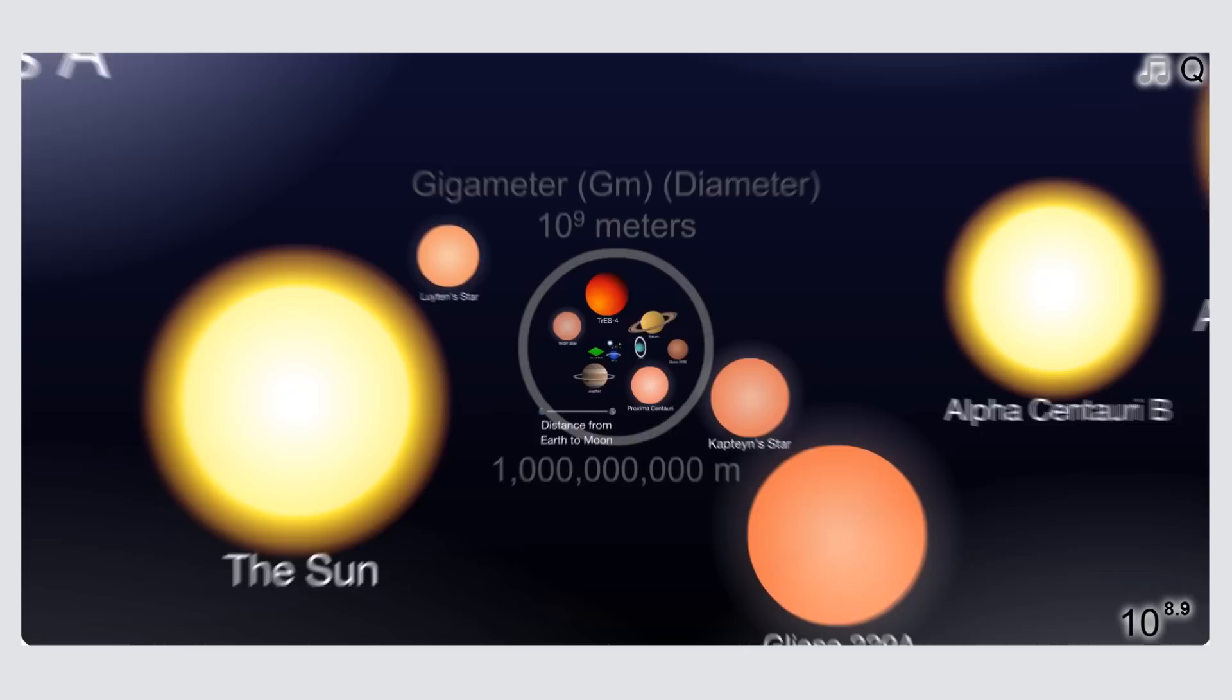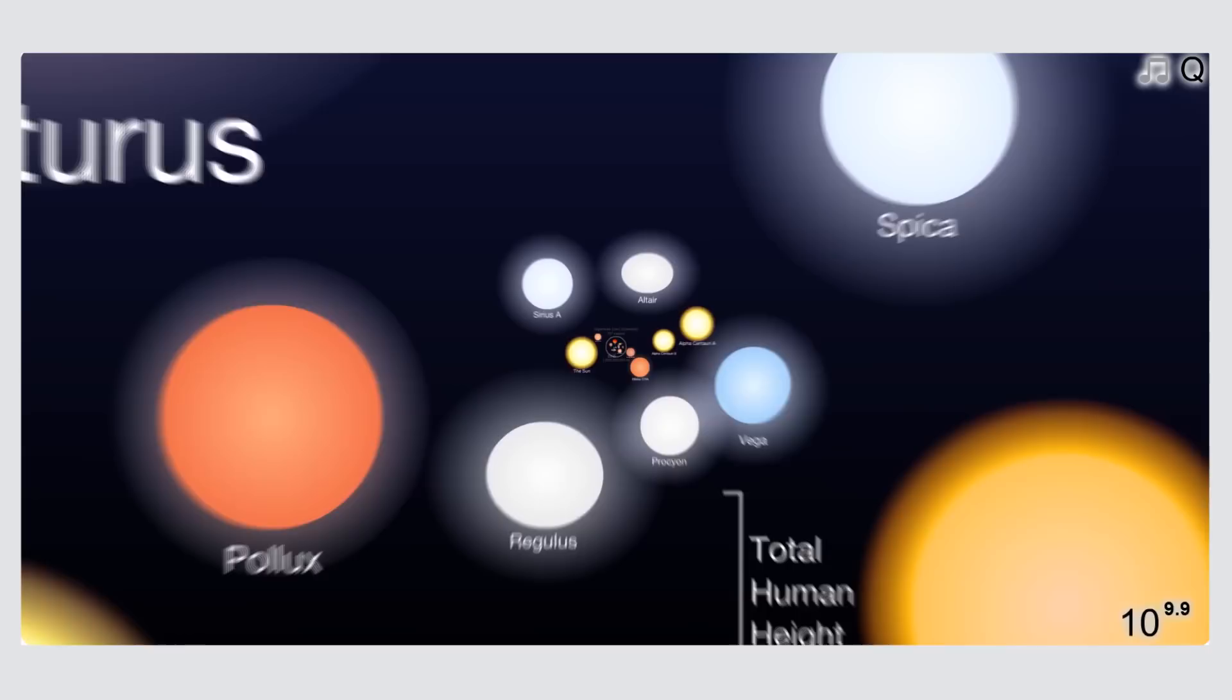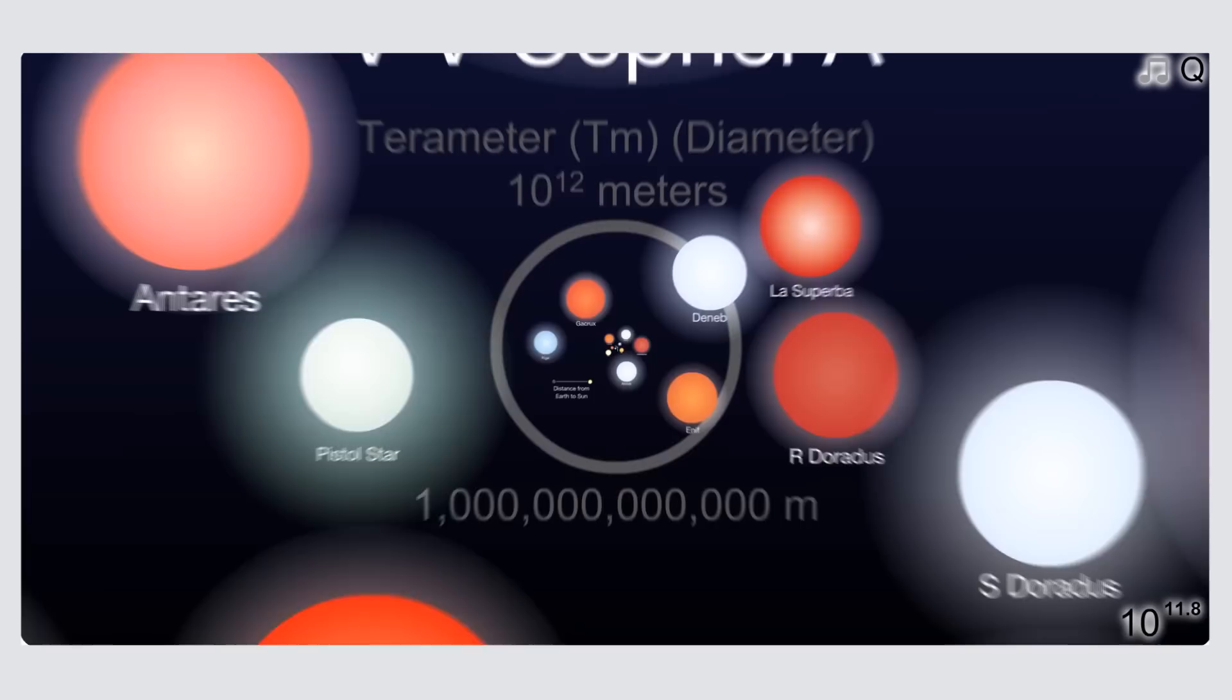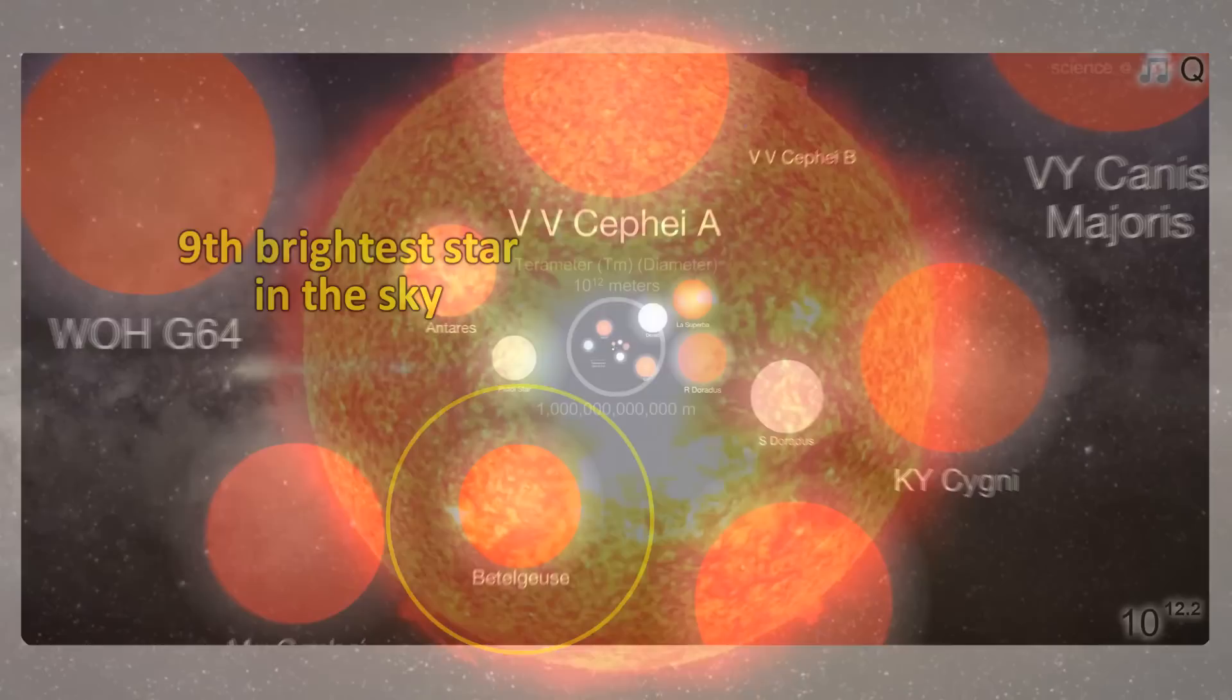Let's go 1000 times larger than the size of the sun, or 1 trillion meters. Now we're looking at some of the largest and brightest stars that we can see in the Milky Way galaxy. Stars like Betelgeuse, a red supergiant, the 9th brightest star in the sky, which is 1.2 billion kilometers in diameter.